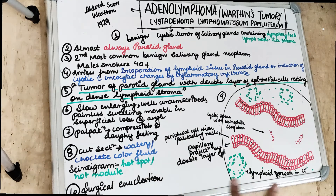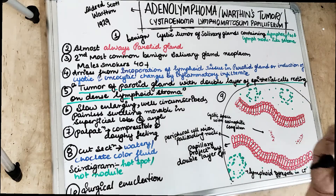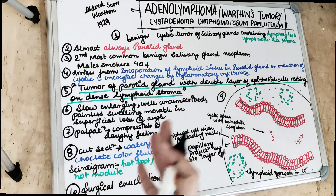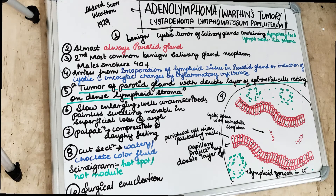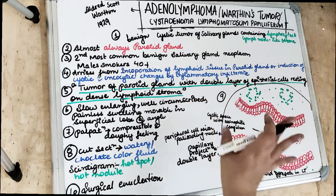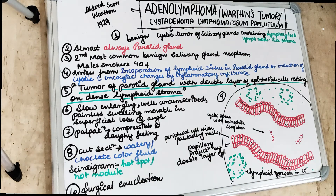To describe adenolymphoma or Warthin's tumor: it is a tumor of the parotid gland with a double layer of epithelial cells resting on a dense lymphoid connective tissue stroma. Clinically, there is going to be slow enlargement — a well-circumscribed, painless, movable swelling. All salivary gland tumors present as movable swellings except cylindroma (adenoid cystic carcinoma), which is painful and fixed due to perineural invasion. All other major salivary gland tumors are movable.